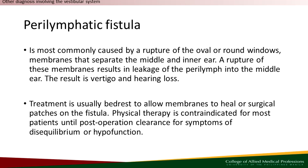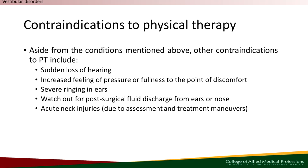Moving on to perilymphatic fistula, which arises from the rupture of the membranes that separate the middle and inner ear. It is usually characterized by symptoms like vertigo and hearing loss, which often causes it to resemble vestibular dysfunction. However, perilymphatic fistula is characterized by perilymph leakage and is often accompanied by pain, necessitating caution with interventions. For most of the clinical course, physical therapy will be contraindicated until post-operative clearance is obtained. Once medically cleared, physical therapists can play a vital role in addressing vestibular hypofunction. Please remember that Meniere's disease and perilymphatic fistula are contraindicated for physical therapy unless otherwise medically cleared. Other contraindications include sudden loss of hearing, increased feeling of pressure or fullness to the point of discomfort, severe ringing, post-surgical fluid discharge, and acute neck injuries, as all assessment procedures will forcefully place the neck in provoking positions.